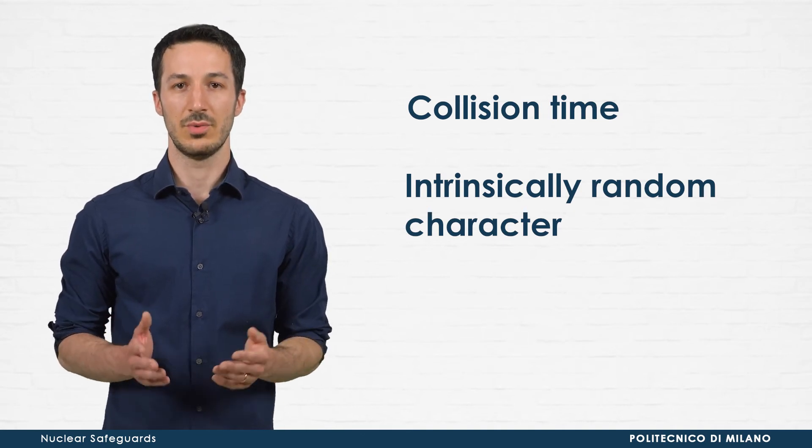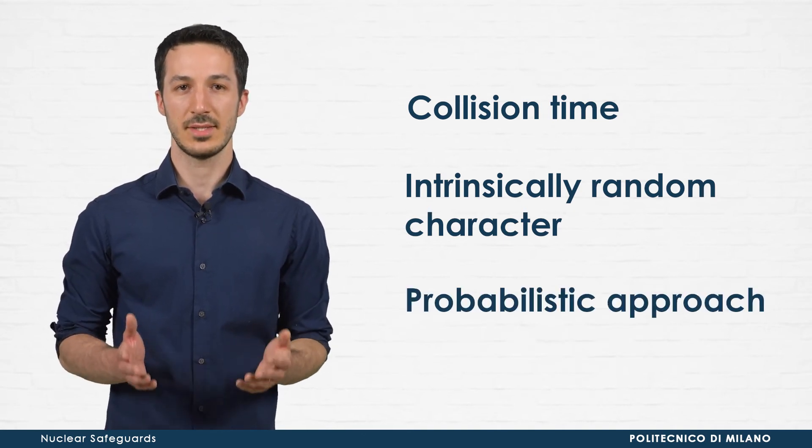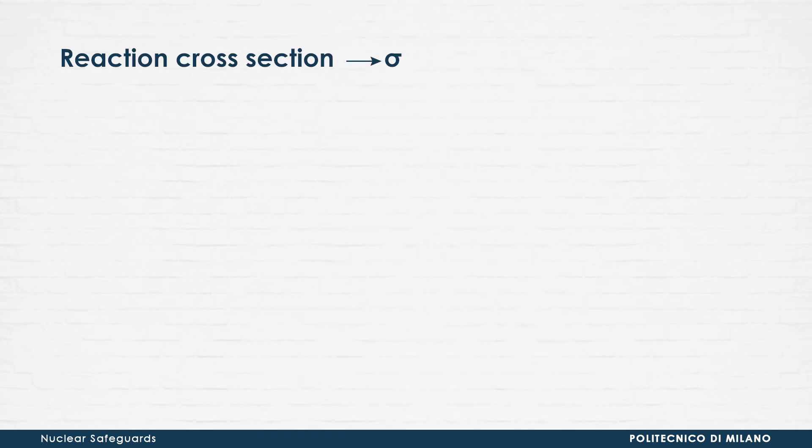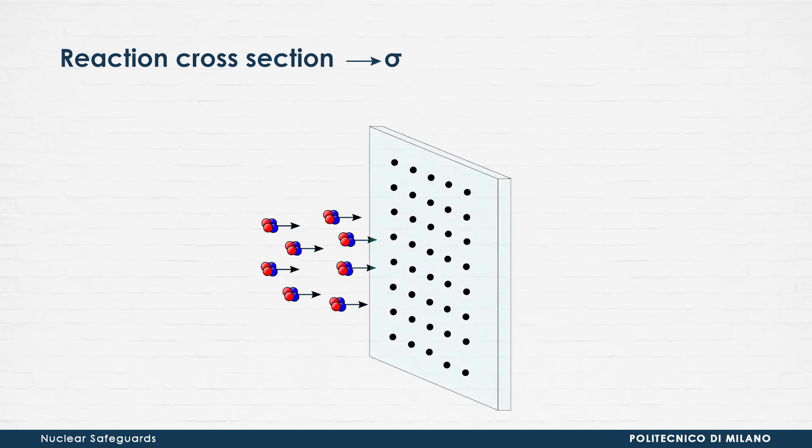Therefore, you need to adopt a probabilistic approach to correctly describe this phenomenon. For these reasons, a very important physical quantity is introduced in modern physics, the so-called reaction cross-section. The reaction cross-section is related to the probability of interaction between the projectile and the target. The definition of the cross-section has a strong experimental connotation.